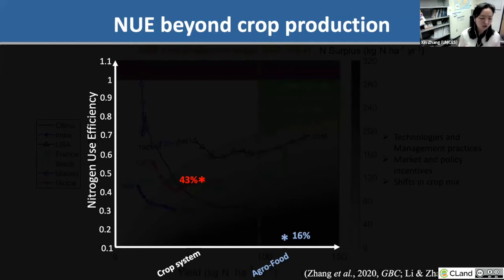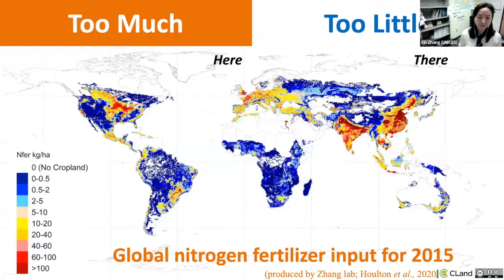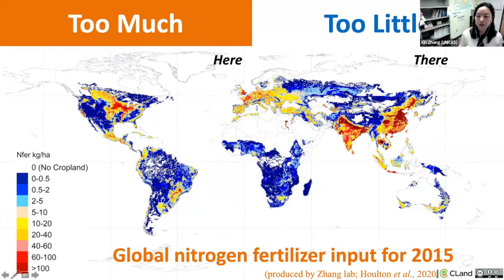This too-much-and-too-little paradox is also evident across world regions. This is a global map of fertilizer inputs produced at my lab. While there are intensive nitrogen inputs in China, India, and the Corn Belt US, nitrogen inputs into the African continent remain very low. What are the consequences of such uneven distribution of nitrogen input?